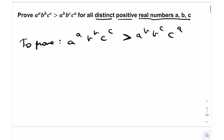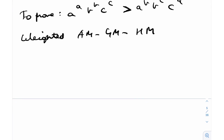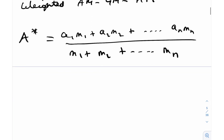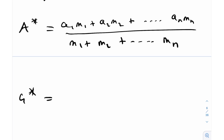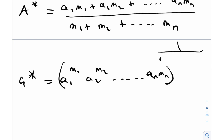Before we get to that, it's worthwhile discussing what the weighted AM-GM-HM is. The weighted AM, represented as A-star, is A₁M₁ + A₂M₂ + ... + AₙMₙ, divided by M₁ + M₂ + ... + Mₙ. Similarly, the weighted geometric mean G-star is A₁ raised to M₁, times A₂ raised to M₂, and so on up to Aₙ raised to Mₙ, all raised to the power of 1 over (M₁ + M₂ + ... + Mₙ).